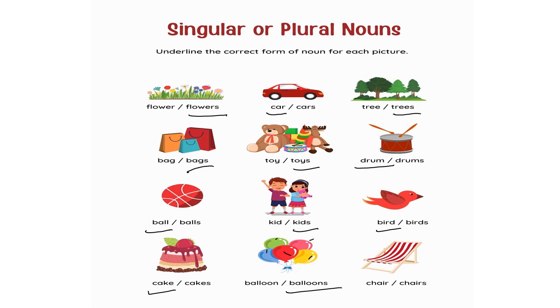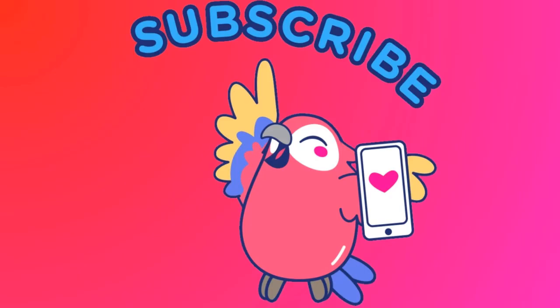Chair or chairs — only one chair is there, so: chair. Okay students, that's all for today. I hope you understand this concept very well. Still, if you have any doubts, please do comment in the comment box. And if you like my video, please subscribe to my channel. Till then, bye. Take care and have a nice day. Thank you.